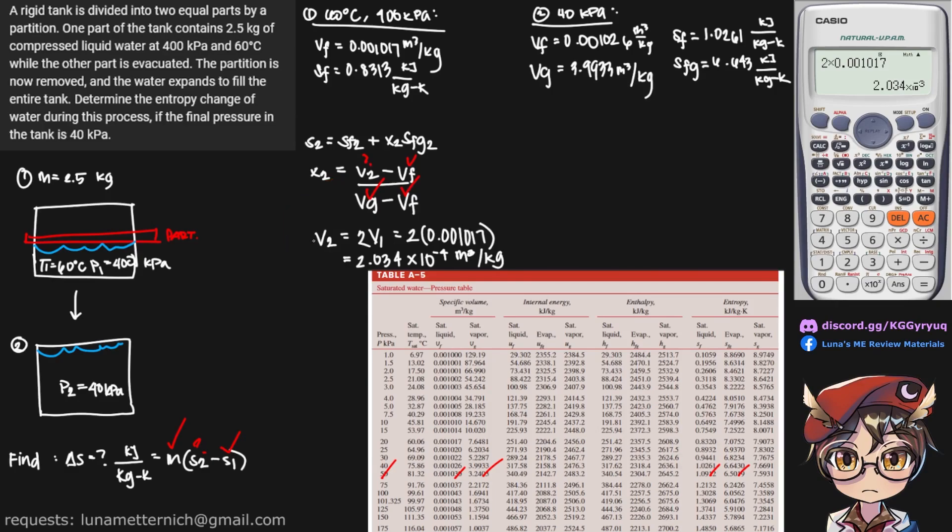Now we can put that in there. And that should return a value of 2.5251 times 10 raised to the negative 4. This is dimensionless, because these two cancel out.